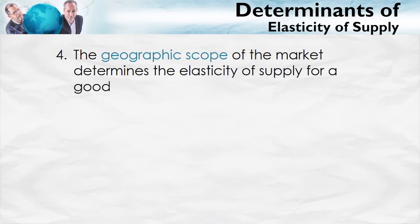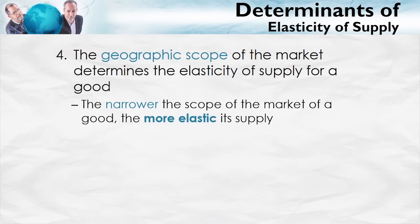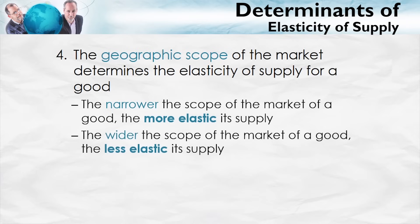The geographic scope of the market is another determinant of the elasticity of supply. The narrower the scope of the market, the more elastic the supply; the wider the scope, the less elastic. For example, suppose that the demand for gasoline increases in Washington, D.C. because more people are moving to the region. That demand can easily be supplied by taking a little gasoline from elsewhere in the country, increasing the supply in Washington, D.C. very easily without pushing up the price hardly at all.